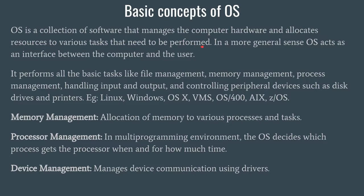Your computer has very complex hardware, and it is not possible for a human being to control that hardware entirely. So it is the OS which serves that purpose for you. The OS acts as your assistant to manage the hardware and also allocates resources to various tasks. For example, when you want to print a PDF or document file, all you need to do is press Ctrl+P and the file gets printed. The OS tells the computer which printer to use. In a more general sense, the OS acts as an interface between the computer and the user, completely abstracting the underlying hardware.